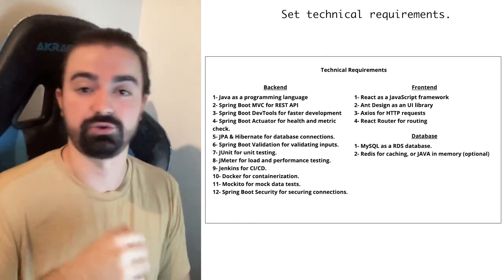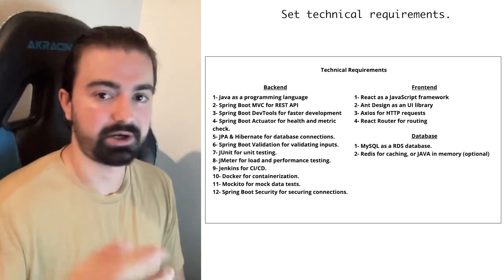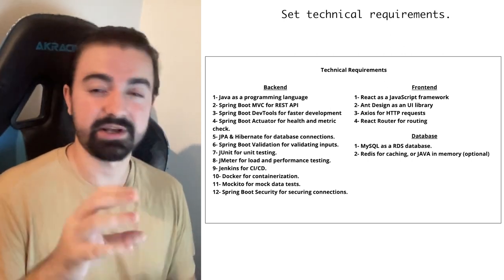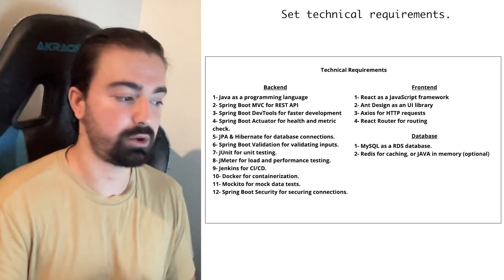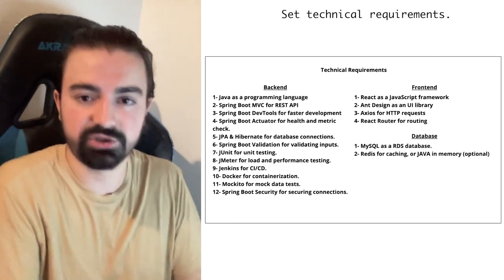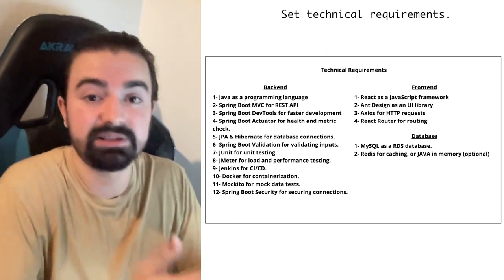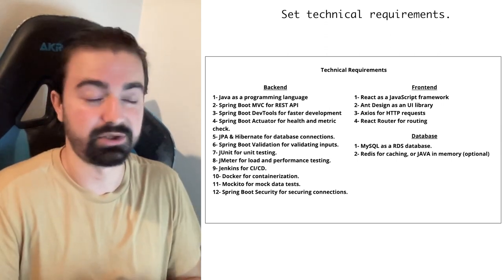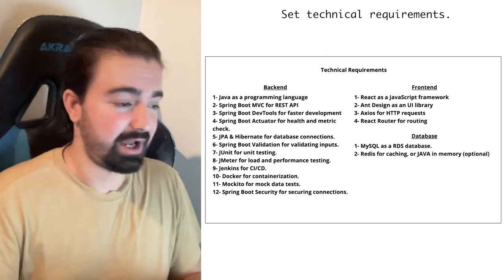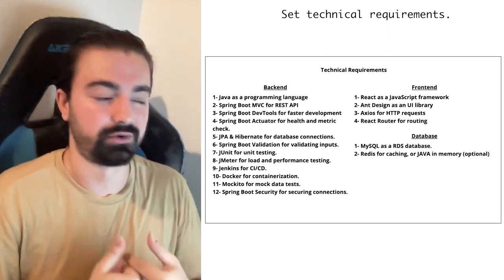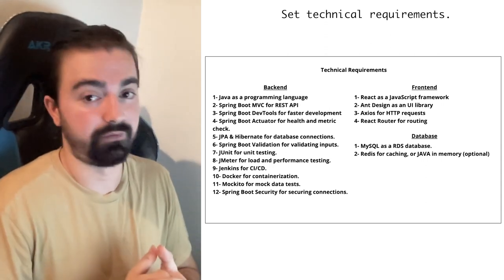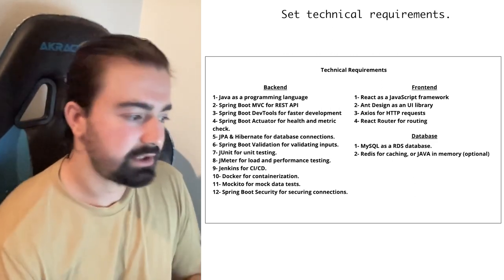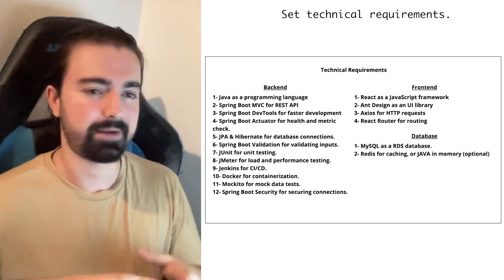The eighth part is Jenkins for CI/CD. CI/CD is one of the important parts of the development process — you want to continuously integrate and continuously deploy, because you don't want to do manual things. These manual tasks take your time and incur cost. Time is one of the most important things in the software development process.